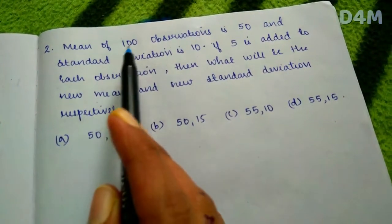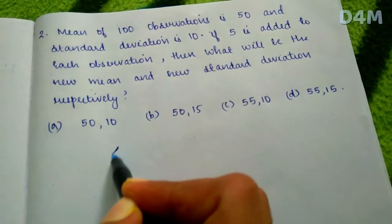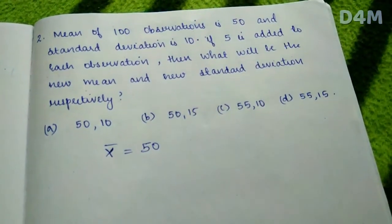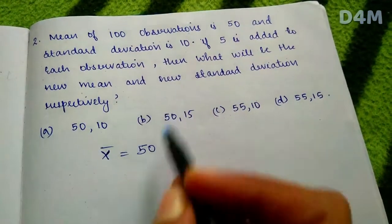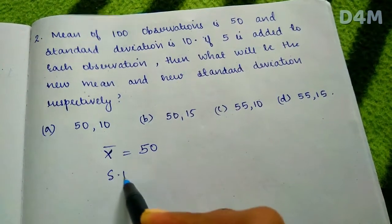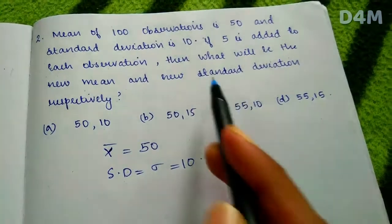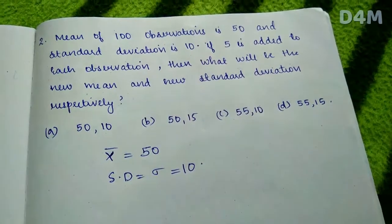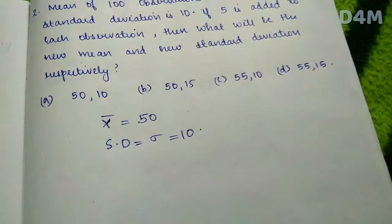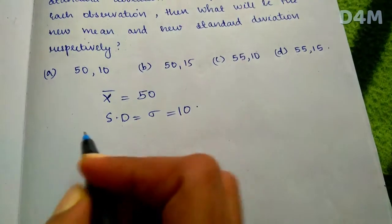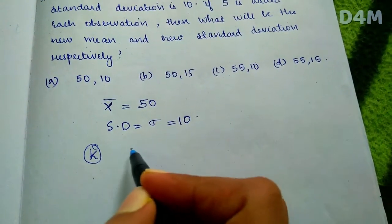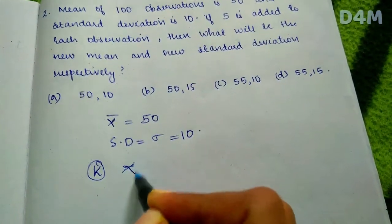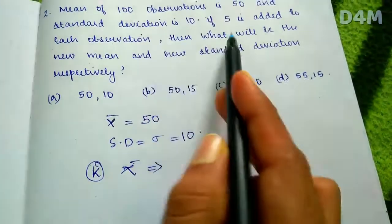Second problem: Mean of 100 observations is 50, so x-bar equals 50. Standard deviation sigma is equal to 10. If 5 is added to each observation, what will be the new mean and new standard deviation?